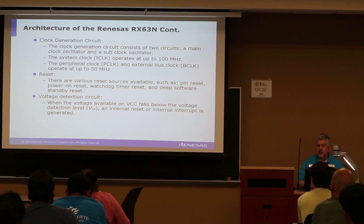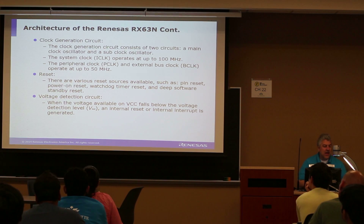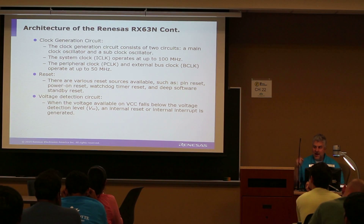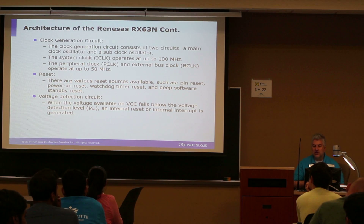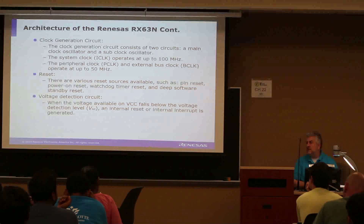The processor itself has a clock generation circuit — a general clock oscillator and a sub-clock oscillator. The system clock is called iClock, operating up to 100 megahertz. Based on the input oscillator or crystal, you can have a peripheral clock and an external bus clock that operate up to 50 megahertz. We're going to look at the peripheral clock in more detail later, because for example it tells you how frequently you conduct an A-to-D conversion or how fast you send something on the serial port.